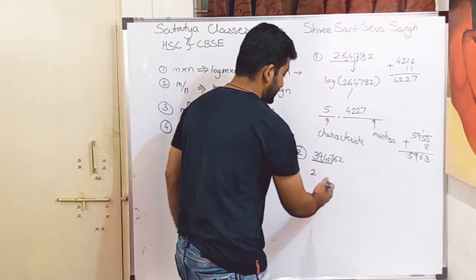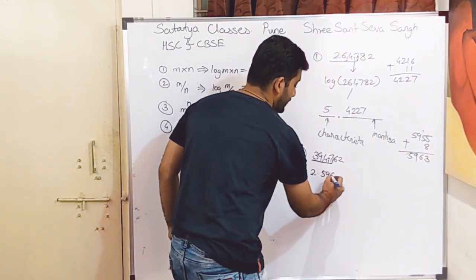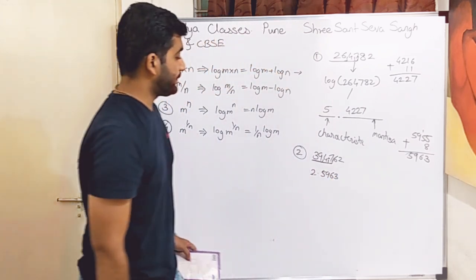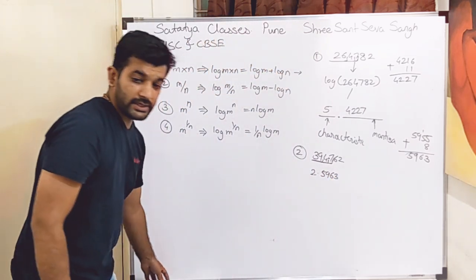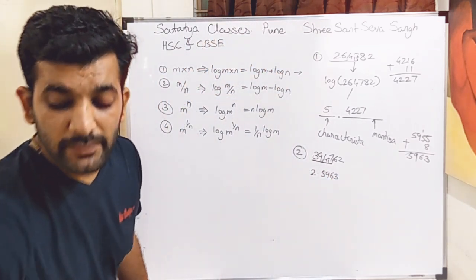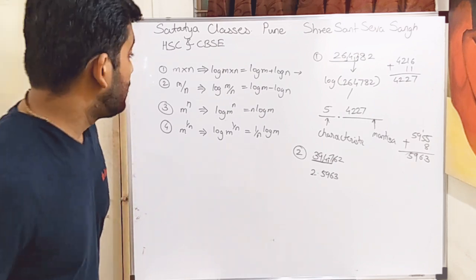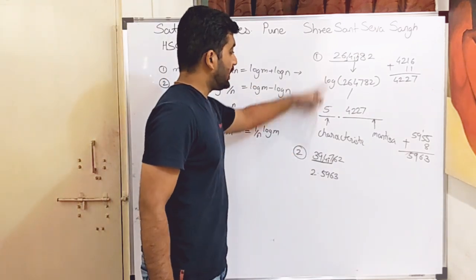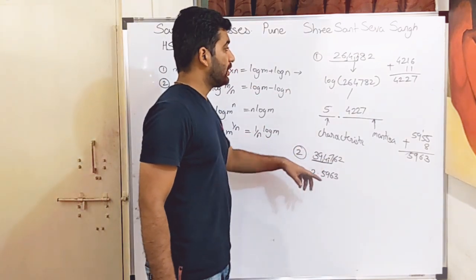So we write 5963 as the mantissa part. The log of 34.394762 is therefore 2.5963. We are now done with the log calculations for this number.